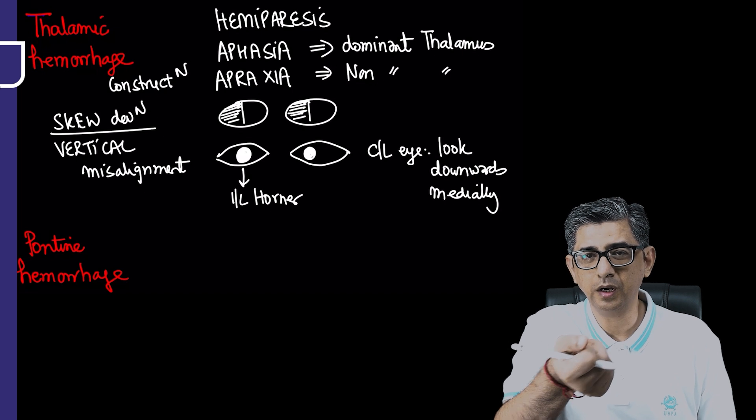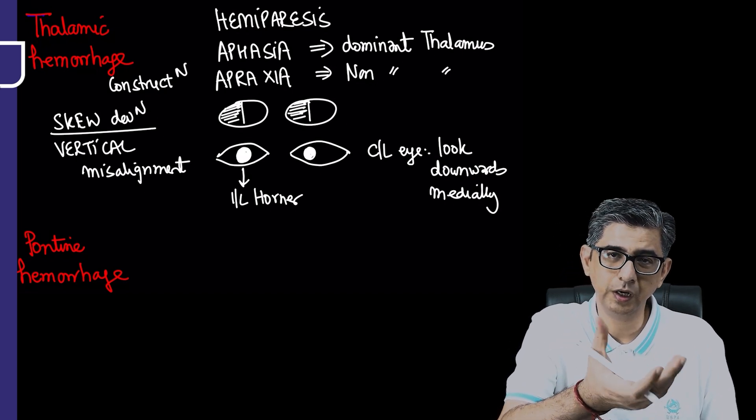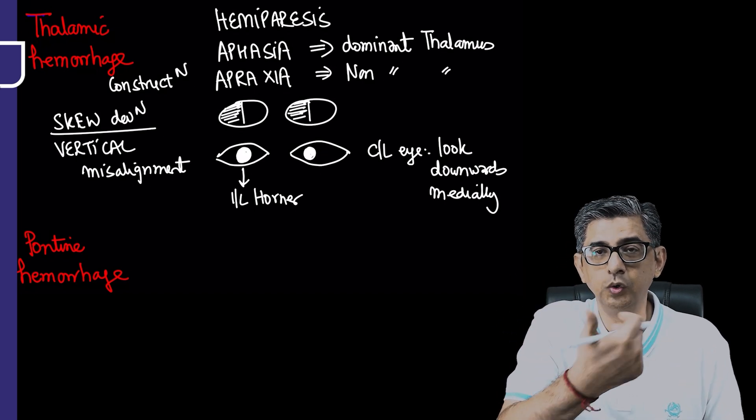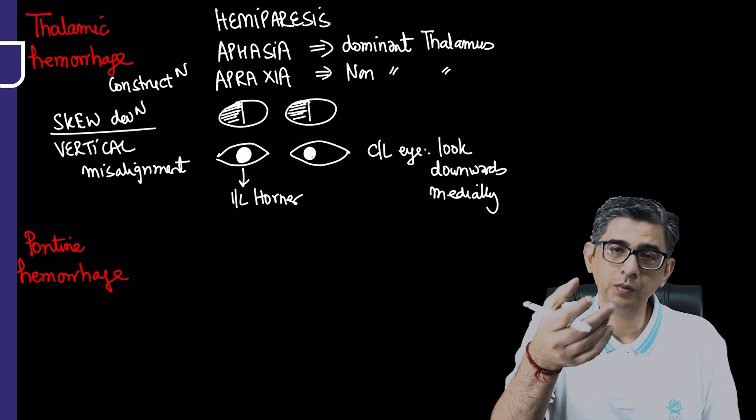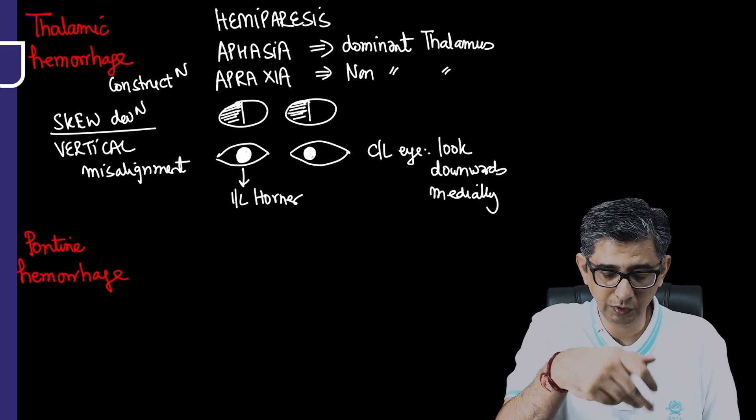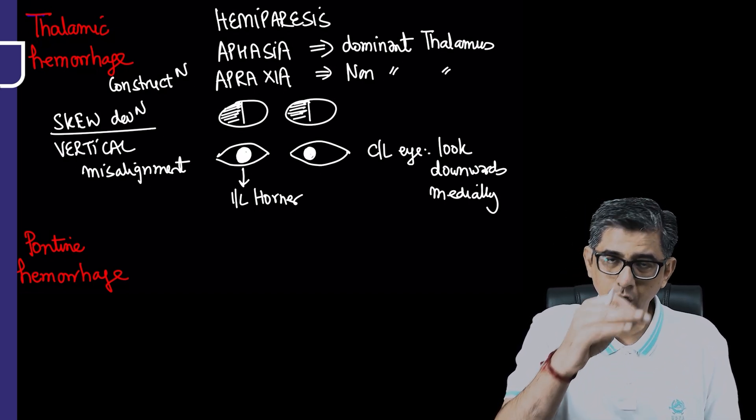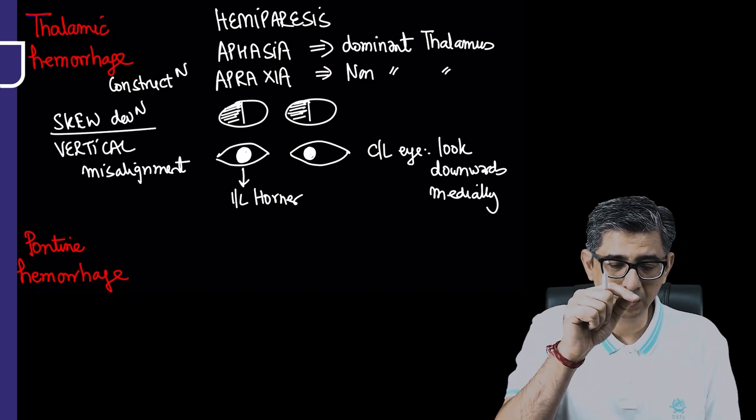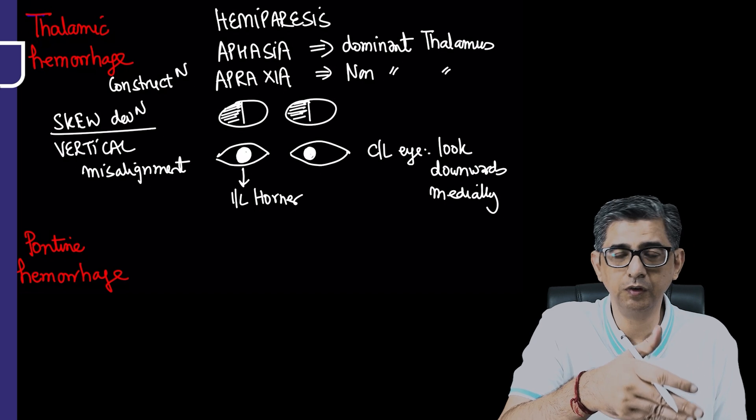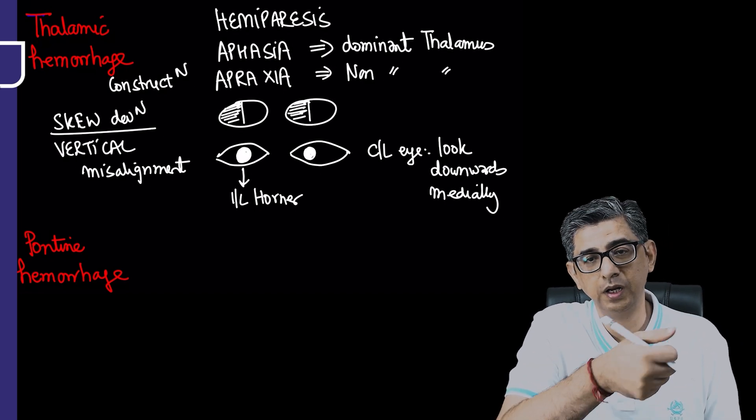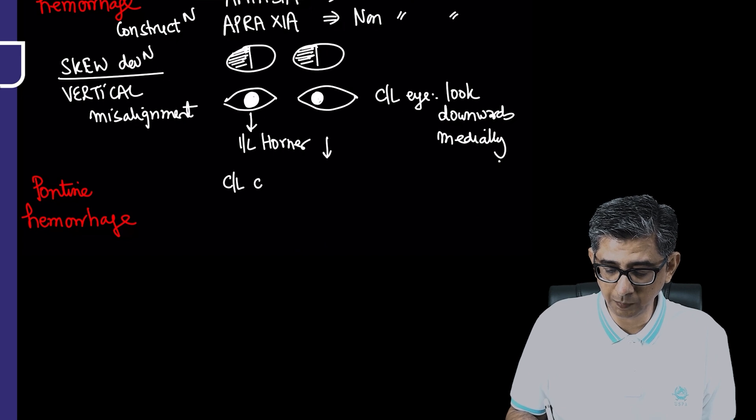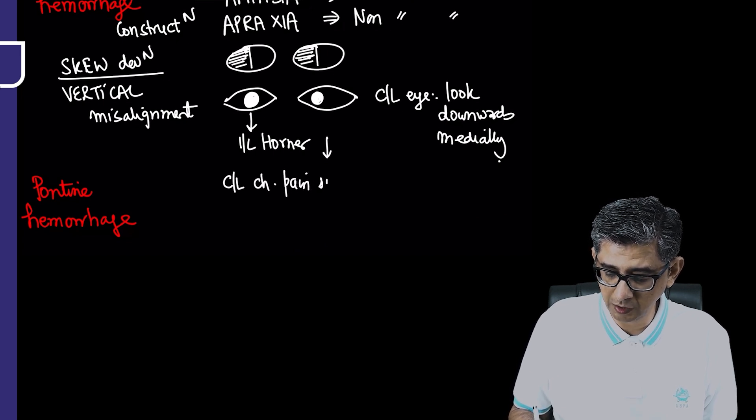This vertical misalignment cannot be ascribed to a single cranial nerve or ocular muscle involvement. The brain has a complex system regulating conjugate gaze. In thalamic hemorrhage, the eyes might look towards the nose. Skew deviation means vertical misalignment that cannot be pinpointed to a single nerve or muscle involvement because multiple centers regulate gaze.